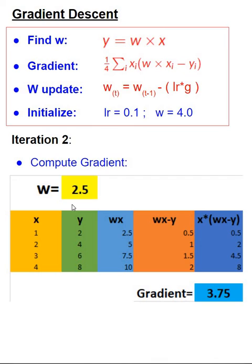Alright, so when we go through this process of calculation, the sum of x times (wx minus y) column divided by 4 is our gradient, which comes to a value of 3.75.